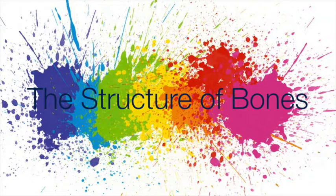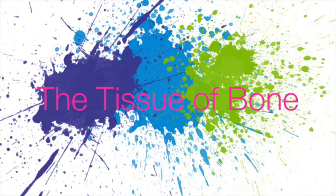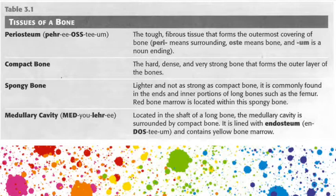Bone is a form of connective tissue and is almost the hardest tissue in the human body — only dental enamel is harder. Although it is very hard and dense, bone is a living structure that changes and is capable of healing itself. The tissues that make up bone are summarized in Table 3.1 on page 38. On the outer side we have the periosteum, which is the tough fibrous tissue that forms the outermost covering of the bone. Peri meaning surrounding, oste meaning bone, and um is the noun ending. We have compact bone, which is the hard, dense, and very strong bone that forms the outer layer.